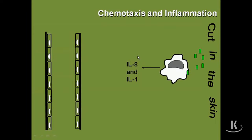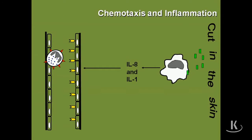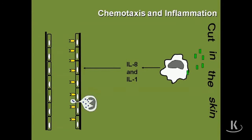Interleukin-8 is one of your major chemoattractive cytokines, and it's going to act on the vascular endothelium to make it a little bit sticky — you can see those yellow cell adhesion markers start to pop up. The white cells moving through have complementary adhesion markers, so they start to bind loosely and eventually very tightly to the vascular endothelium. Eventually they're going to be able to squeeze through, and you've recruited a neutrophil from the blood into the tissue to help clean up the infection.